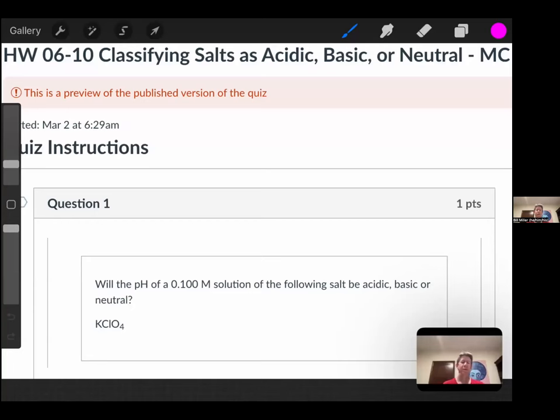Will the pH of a 0.100 molar solution of the following salt be acidic, basic, or neutral? What we have to do is take this apart because this is an ionic compound that dissolves in water. That's what a salt is. I could write: will the pH of a 0.100 molar solution of the following ionic compound that dissolves in water be acidic, basic, or neutral?